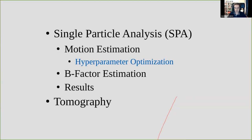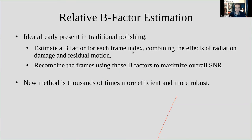Once we've found reliable motion statistics parameter triplets for a dataset, we align the entire dataset with those. We then proceed to estimate B-factors. This idea was already integrated into original particle polishing: we measure one B-factor for each frame index, not each individual frame. That B-factor combines both radiation damage and the motion we haven't fully accounted for — typically in the very early frames. Finally, we recombine the frames using these B-factors so that low frequencies are taken from all frames, but high frequencies only from the frames with good B-factors.